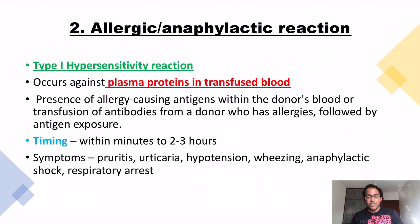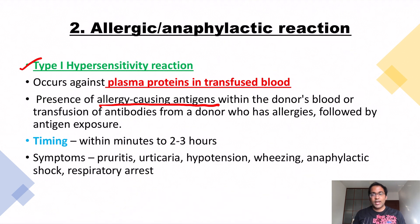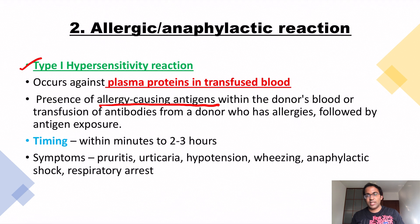The second type of reaction is an allergic or anaphylactic reaction. This is a type 1 hypersensitivity reaction — bolded and underlined. It occurs against plasma proteins in transfused blood. The type 1 hypersensitivity reaction involves IgE immunoglobulins: the Fc portion of IgE binds mast cells, and the antigen binds to the Fab portion of IgE, leading to degranulation of mast cells.